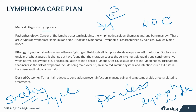Certain risk factors increase the chance of developing lymphoma, including being male over the age of 55, having an impaired immune system, and certain infections like Epstein-Barr virus as well as H. pylori. The desired outcome is to maintain adequate ventilation, prevent infection, and manage pain and symptoms of the side effects related to treatments.